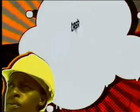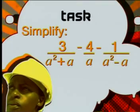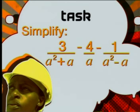Now you need to do a task on your own. Simplify 3 divided by a squared plus a minus 4, divided by a minus 1, divided by a squared minus a. We have come to the end of another lesson on fractions. For adding and subtracting fractions, we still use our knowledge of factorization, and we always need to find a lowest common denominator.